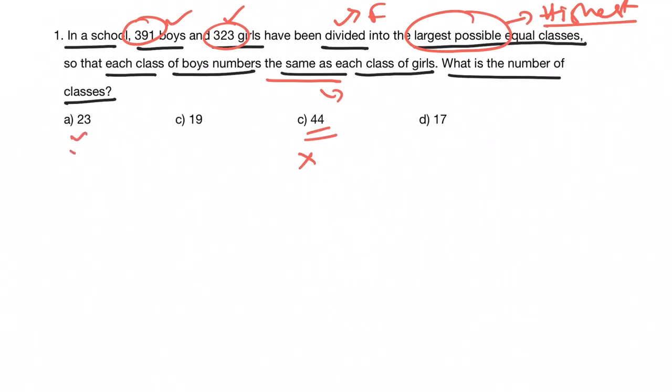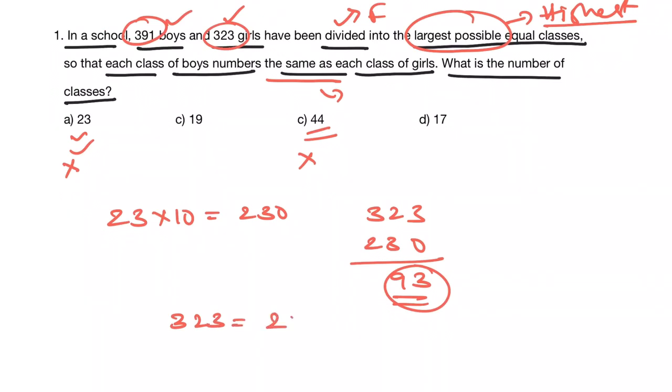Now check option A. We know 23 into 10 equals 230. From 323, if you subtract 230, you will be having 93. 93 is not a factor of 23. So option A is also eliminated. That means 323 cannot be written as multiples of 23, that's why I have eliminated option A.